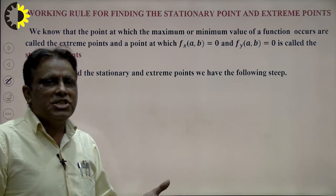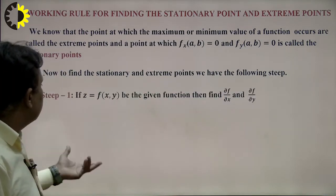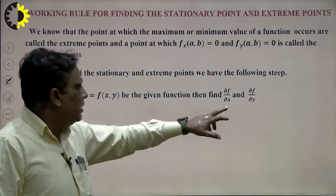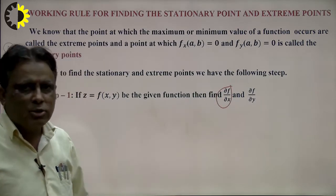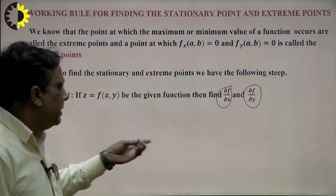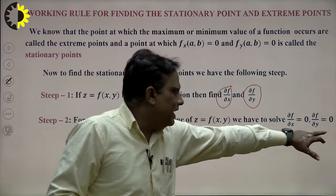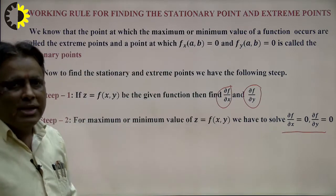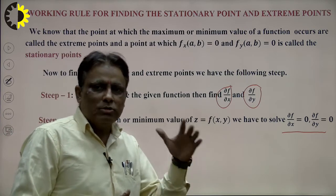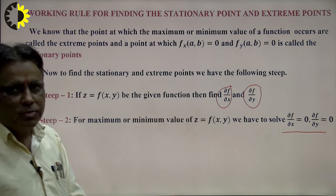To find the stationary and extreme points, we follow these steps: z = f(x,y) is given and we calculate ∂f/∂x (first partial derivative with respect to x) and ∂f/∂y (first partial derivative with respect to y), then put them equal to 0 for maxima and minima. The first derivative must be 0 because the tangent is parallel to the x-axis and parallel to the y-axis.